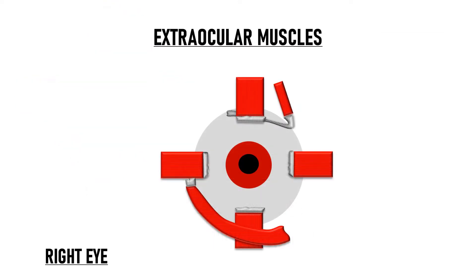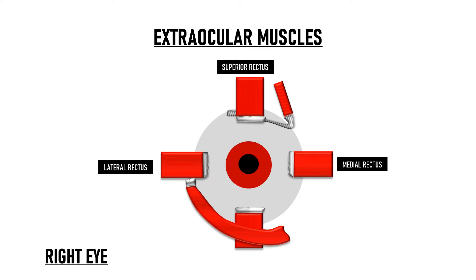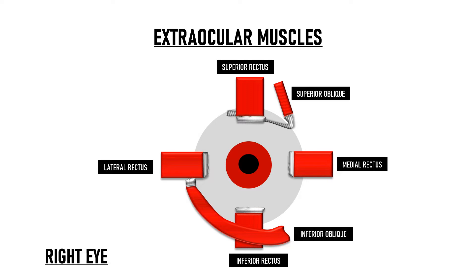We know that there are 6 extraocular muscles that are responsible for eye movements. There are 4 recti: the medial rectus, lateral rectus, superior rectus, and inferior rectus, and 2 obliques: superior oblique and inferior oblique.